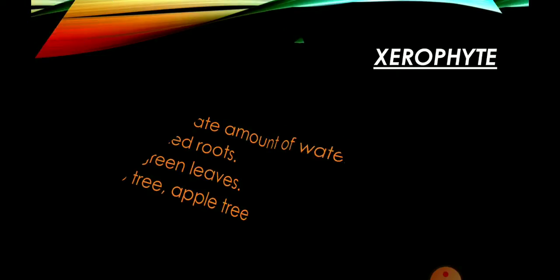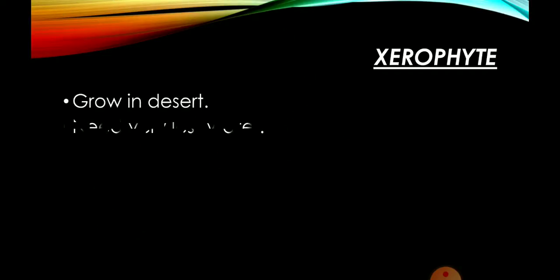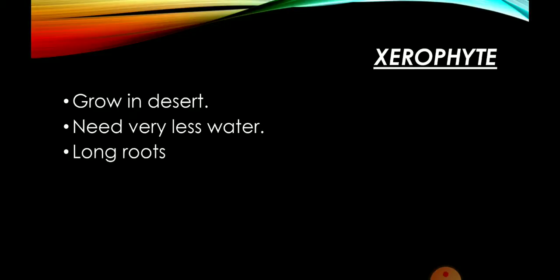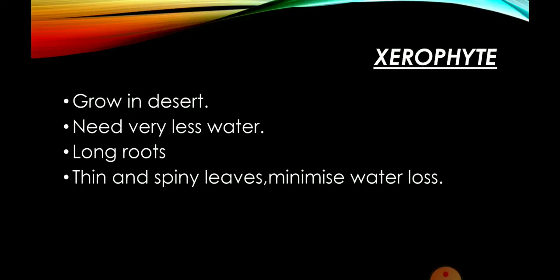Xerophytes — they grow in deserts, पानी बहुत कम चाहिए। इनकी roots होती हैं बहुत लंबी, बहुत नीचे तक जाती हैं desert की sandy soil में। और इनकी leaves होती हैं — वो पतले-पतले काँटे होते हैं। वो जो काँटे होते हैं, वो उनकी leaves हैं। The reason is water loss — normal trees में transpiration and evaporation से पानी जाता है, लेकिन xerophytes की leaves काँटे जैसी होती हैं इसलिए water loss बहुत कम होता है। Water इनके stem में stored रहता है.